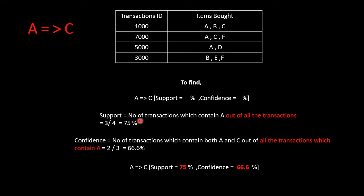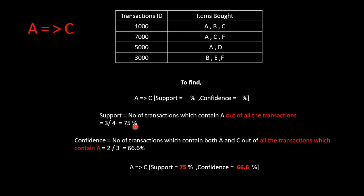Let us calculate the support first. Support is nothing but the number of transactions which contain A out of all the transactions. A implying C is what we need to find out, so we are going to count the transactions which contain A. ABC has got A, ACF has got A, AD has got A, and BEF does not have A. So I have got 3 transactions out of 4, and 3 by 4 is 75 percent — support is 75 percent.